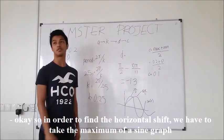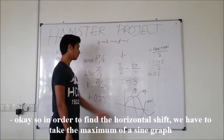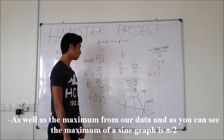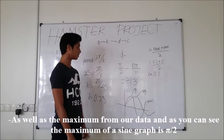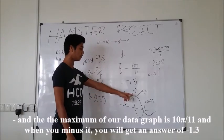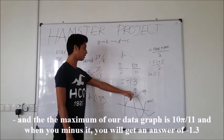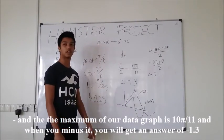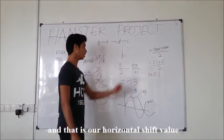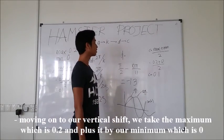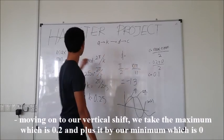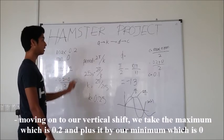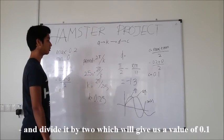Okay, so in order to find the horizontal shift, we have to take the maximum of a sine graph, and as well, the maximum of our data. So as you can see, the maximum of a sine graph is pi over 2, and the maximum of our data graph is 10 pi over 11. So if you minus it, you get a value of negative 1.3, and that is our horizontal shift. Moving on to our vertical shift, we take the maximum, which is 0.2, and plus it by our minimum, which is 0, and divide it by 2, which will give us a value of 0.1.